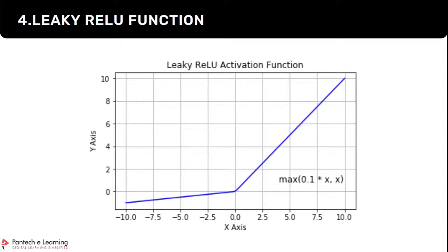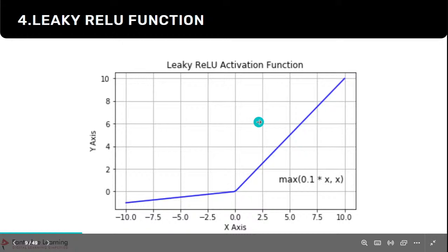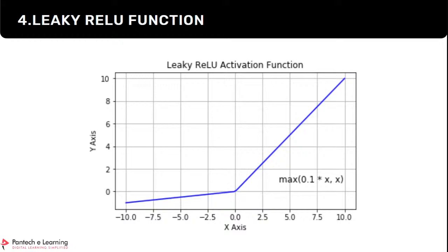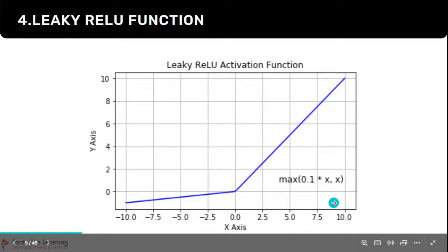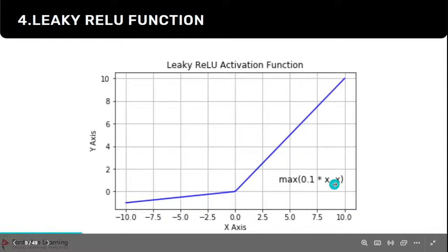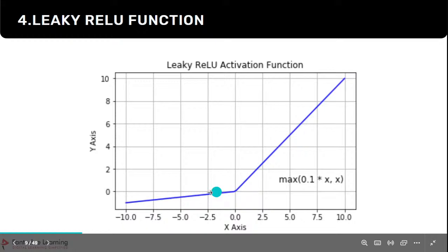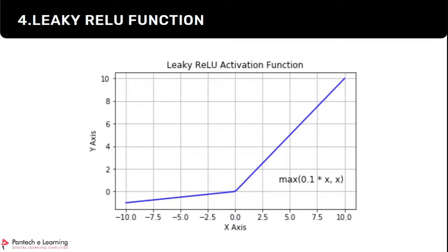Sometimes if ReLU is not performing well — for example if your data has a lot of negative features and you are losing information since ReLU removes all negatives — you could go with leaky ReLU. Leaky ReLU takes the maximum of 0.1 times x versus x. If x is positive it is taken as-is; if x is negative, one tenth of the negative value is kept. So only least importance is given to negative values — some part leaks through — that's leaky ReLU.